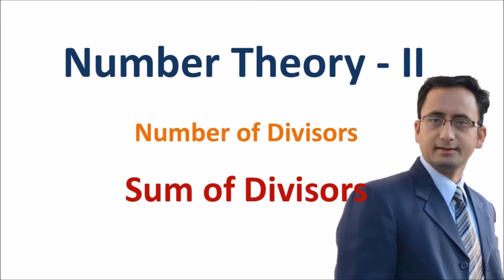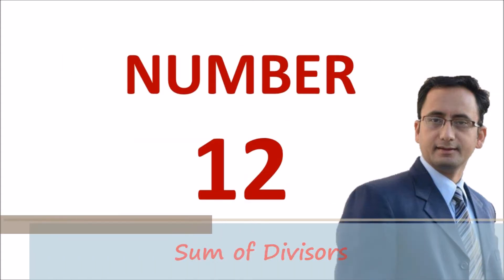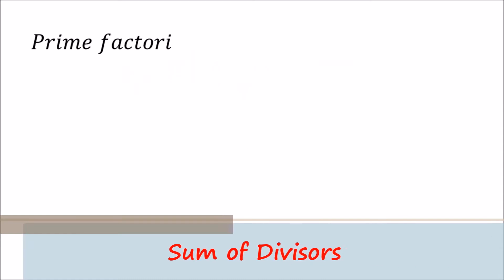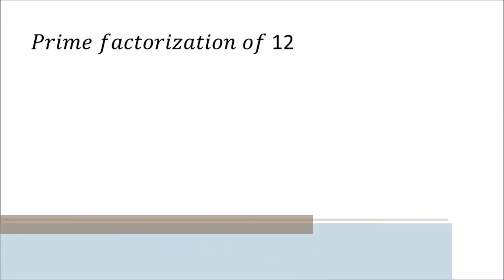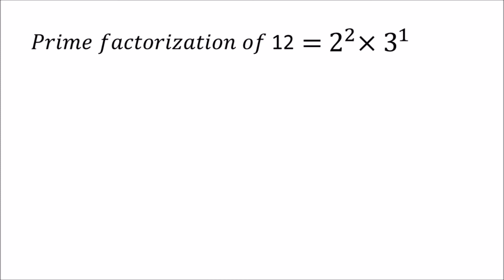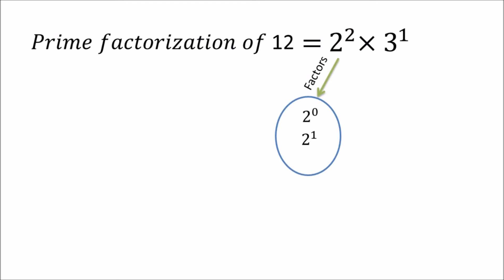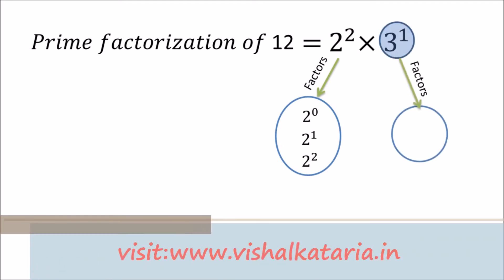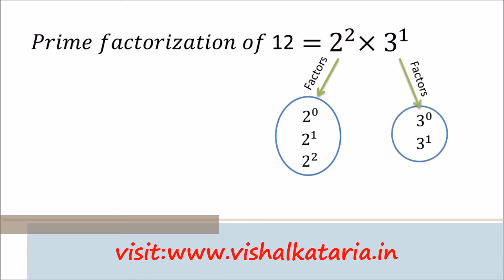Let us start with an example and take the number 12. The prime factorization of 12 is 2 squared times 3. The factor 2 squared has 3 divisors: 2 raised to 0, 2 raised to 1, and 2 raised to 2. The factor 3 raised to 1 has 2 divisors: 3 raised to 0 and 3 raised to 1.